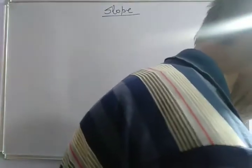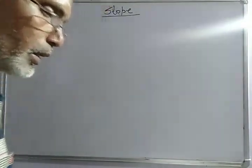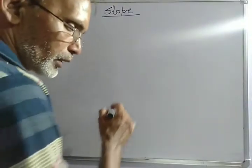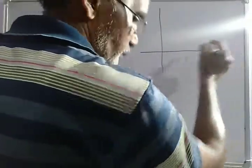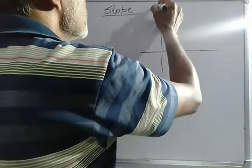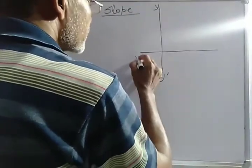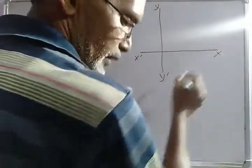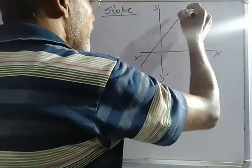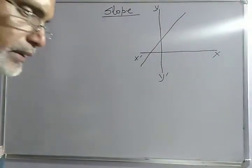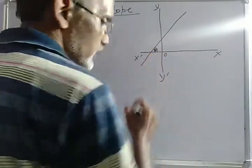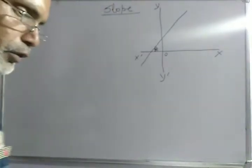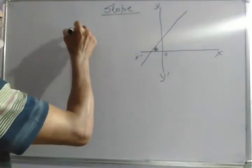What I am going to tell you now is inclination, or angle of inclination. Before knowing about slope, we first have to know what is known as inclination and angle of inclination. If this one is Y, this is Y-dash, this is X-dash, and this is X, and a line goes through the X-axis and Y-axis — this is O, and this angle is known as theta.